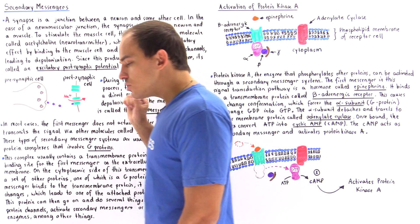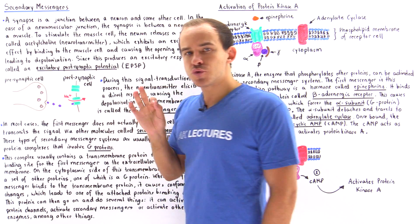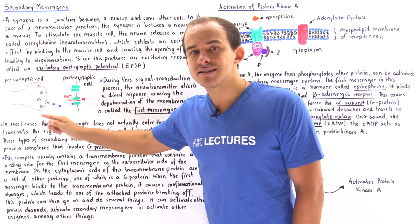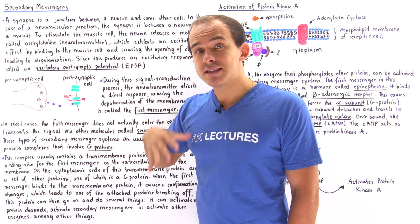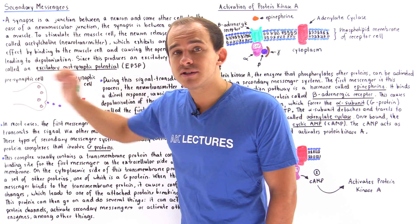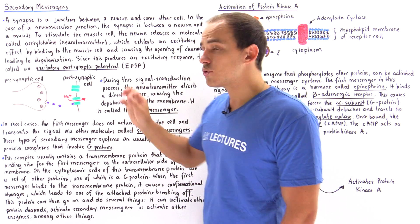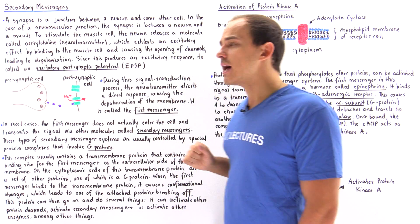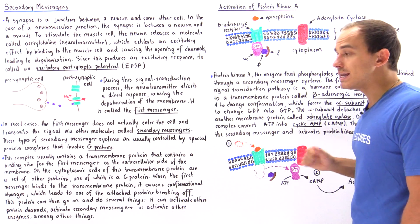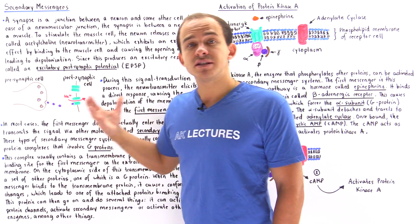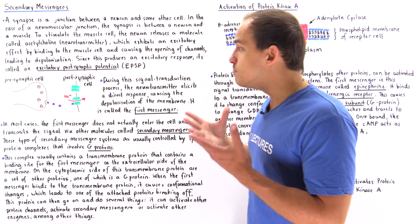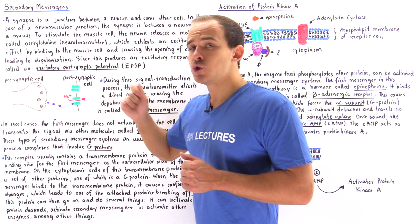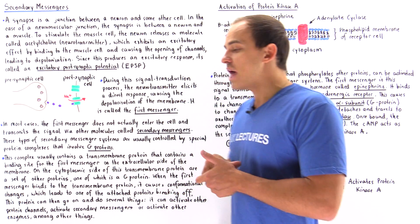Also notice that the neurotransmitter doesn't actually go inside the muscle cell. Instead, it stays on the outside and attaches to the receptor on the extracellular side of the membrane. In most cases, this is what takes place — our first messenger doesn't actually enter the cell to create the response.